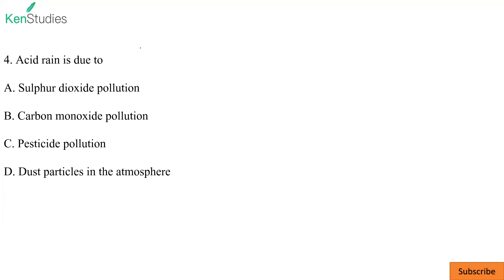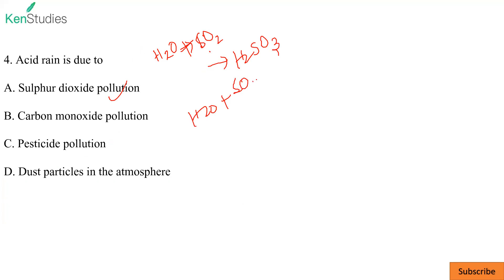Question four: acid rain. Acid rain is due to sulfur dioxide pollution. Rain is H₂O; H₂O plus SO₂ gives H₂SO₃. So A is the correct answer.